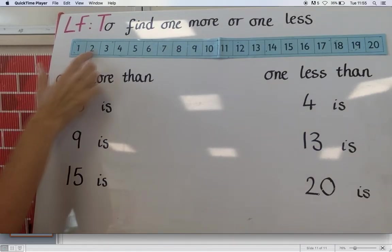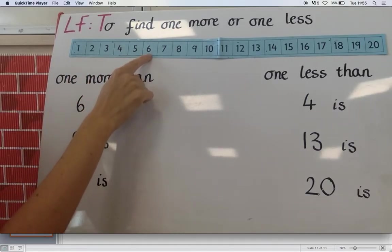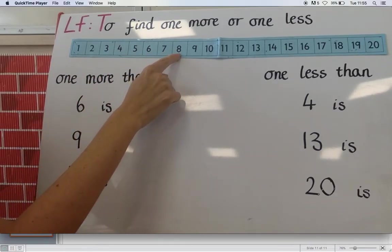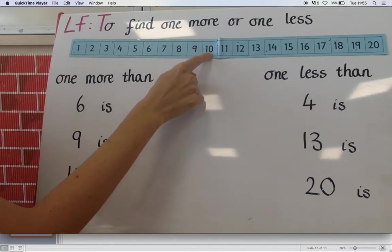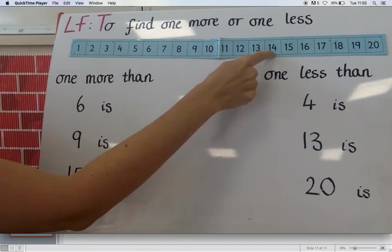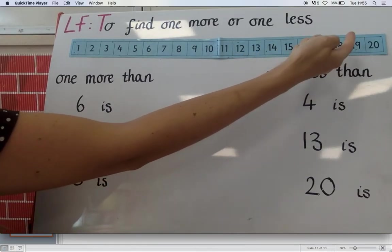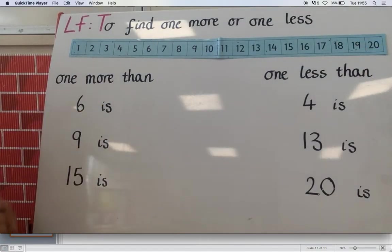I've got one, two, three, four, five, six, seven, eight, nine, ten, eleven, twelve, thirteen, fourteen, fifteen, sixteen, seventeen, eighteen, nineteen and all the way at the end 20.